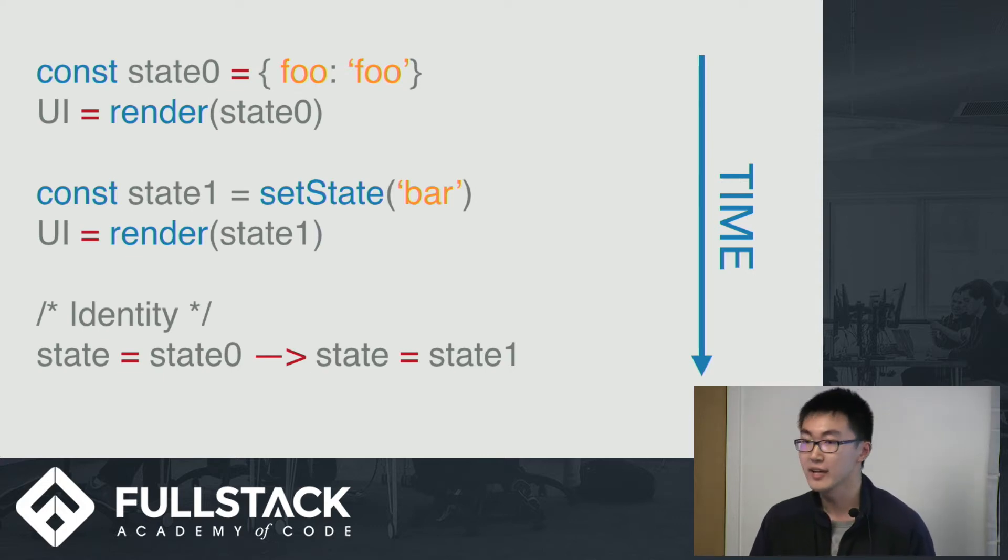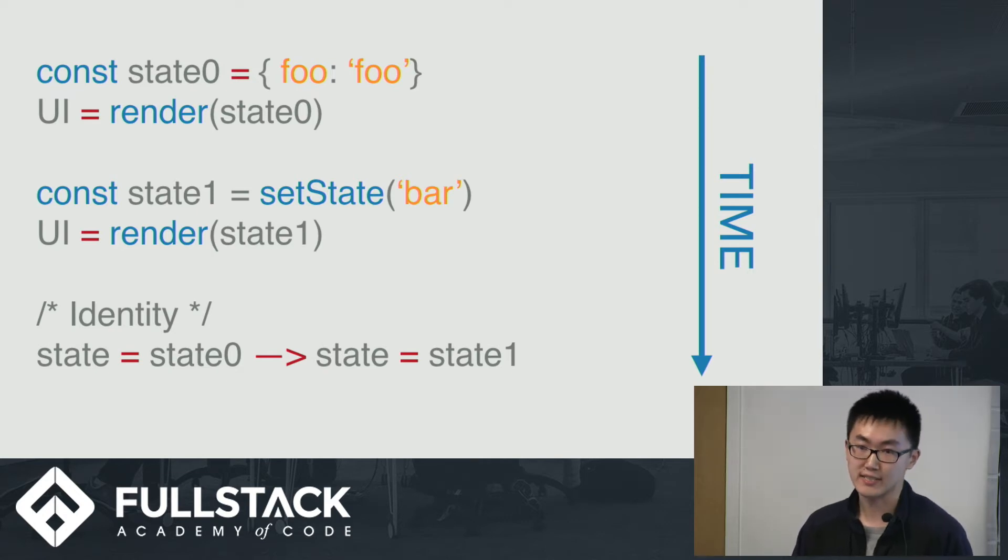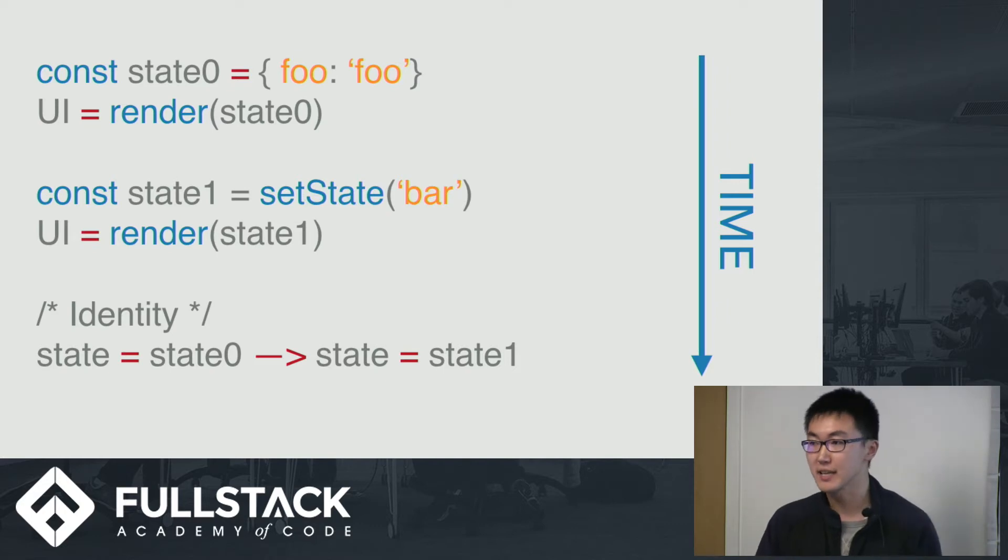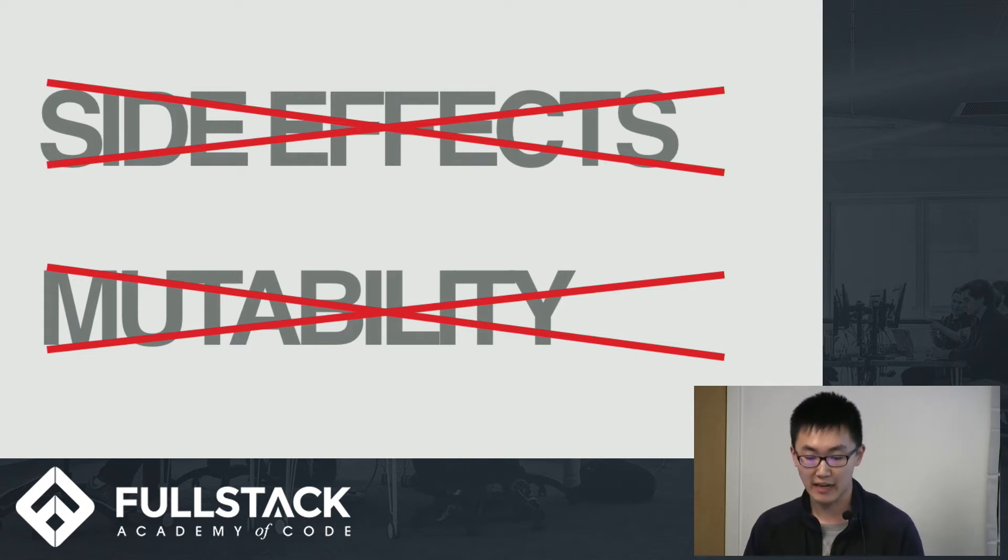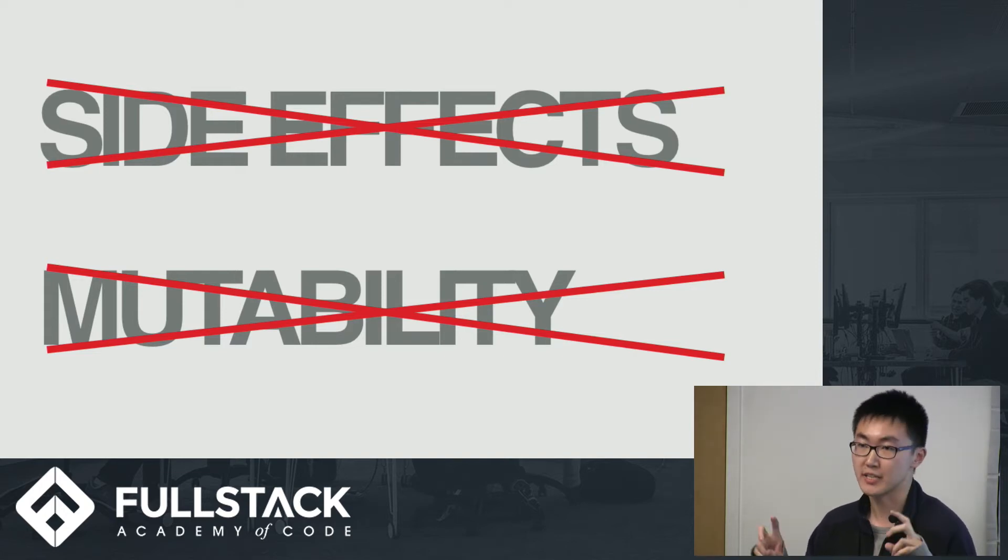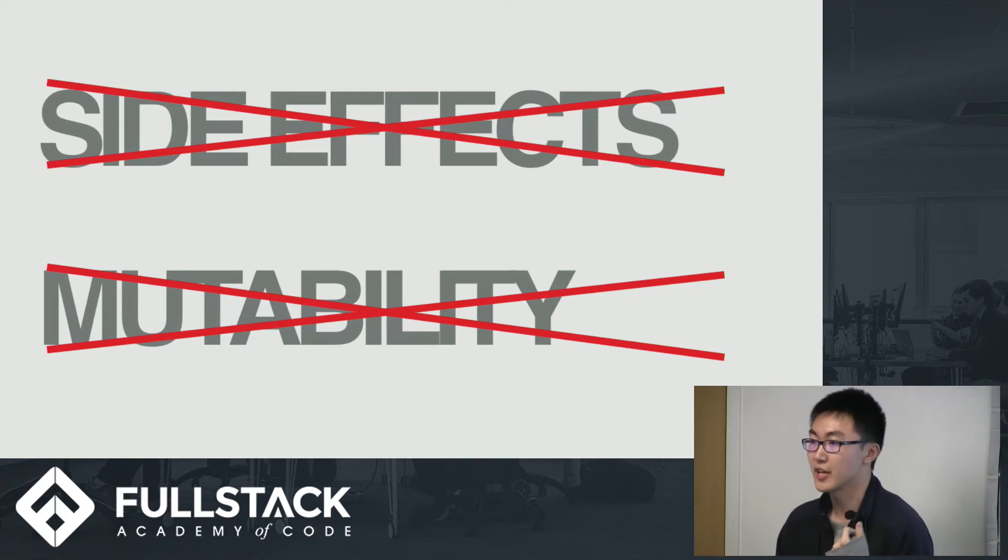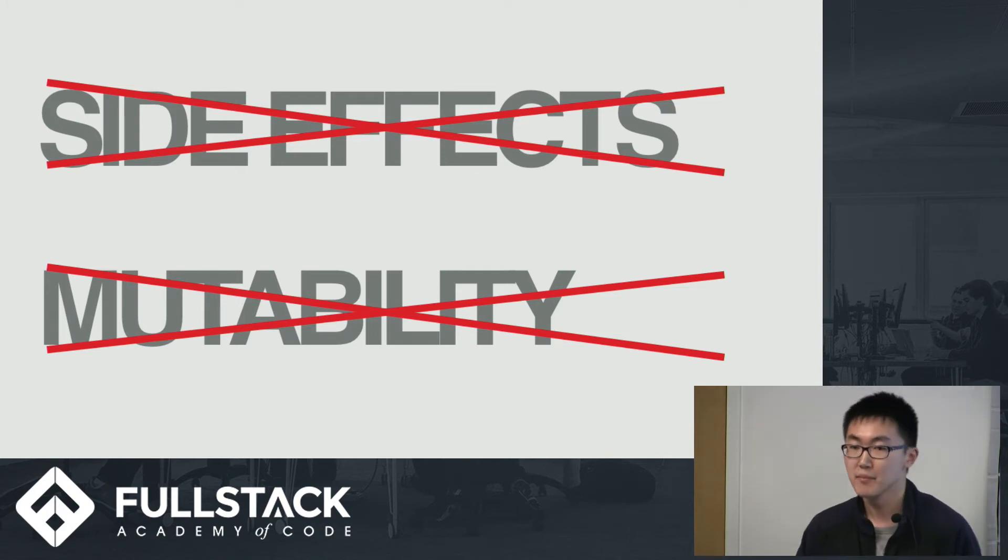So we'll have something that looks like this. So our initial state will be state zero, that has a value of foo. And the UI will render based on foo. And once we set the state to bar, it will give us back a new state called state one. And it will render based on state one. So we still have our single identity of state. But at different points in time, it could either refer to state zero or state one. And we talked about how mutable state is one of the bigger problems in programming. And how this problem can be solved by controlling how the state changes, eliminating side effects. And also by separating value from time, which is eliminating mutability.